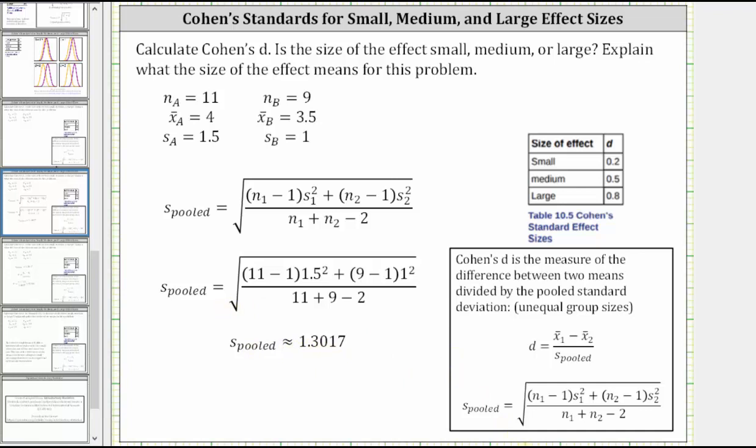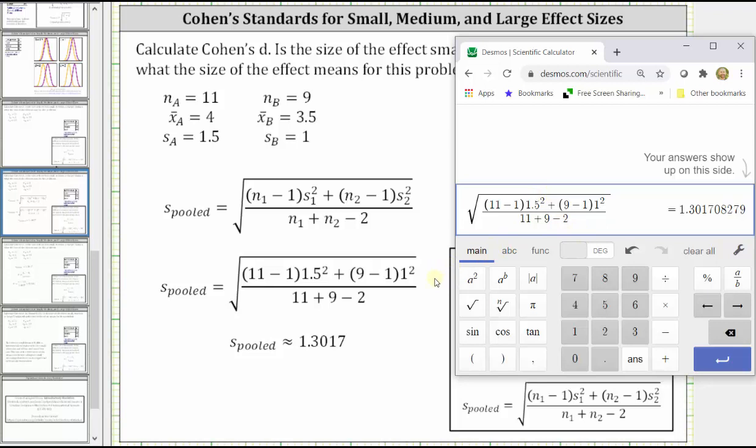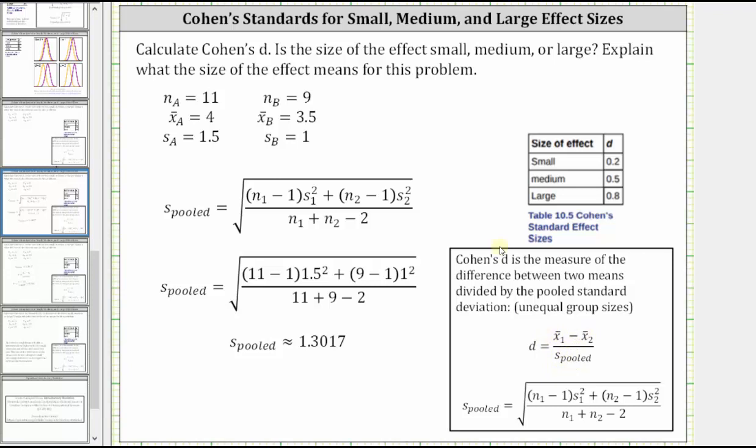Taking the square root of this quotient gives us approximately 1.3017, which I've already calculated here. Now that we have the pooled standard deviation, we now find the difference of the means and divide by the pooled standard deviation.